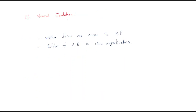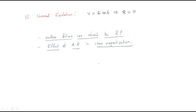Third case: normal excitation. Here V equals E·cos δ, so the reactive power Q becomes zero. Whenever reactive power is zero, the machine neither delivers nor absorbs reactive power. The effect of armature reaction in this case is called cross magnetization. These are three different cases useful to understand the relationship between reactive power and excitation.